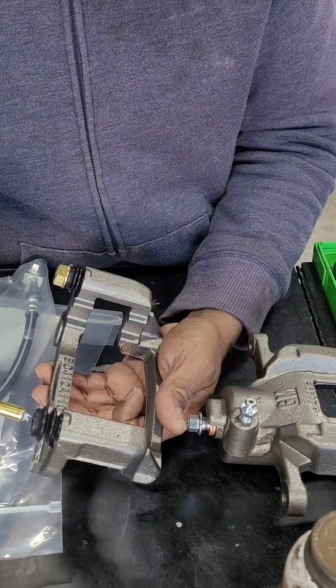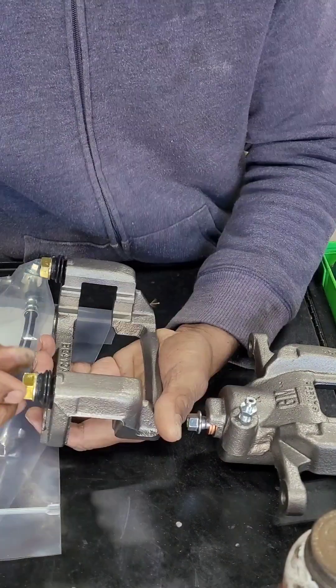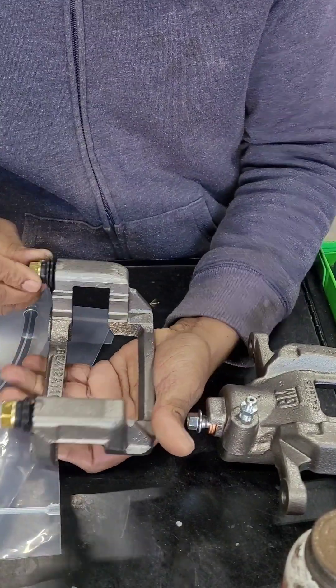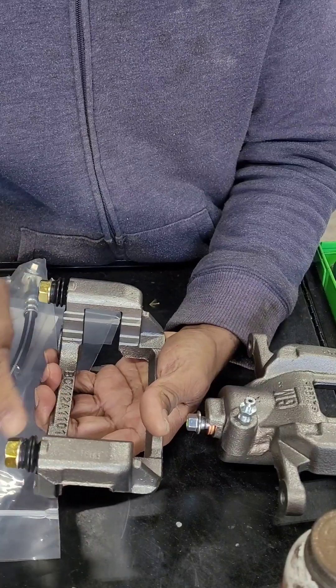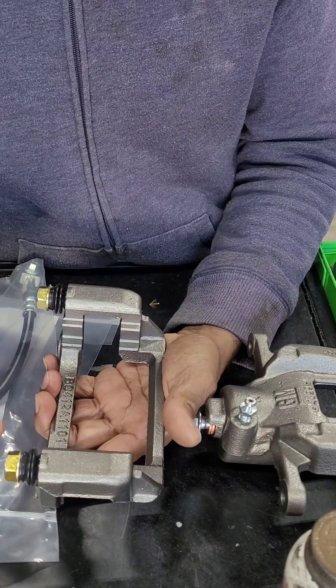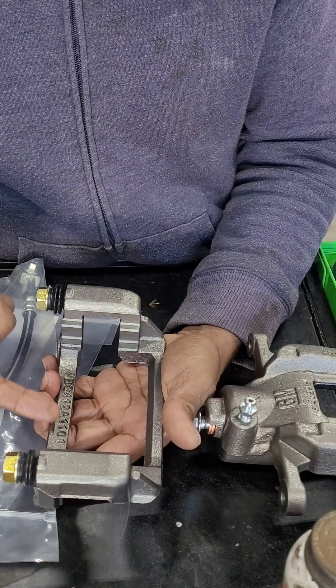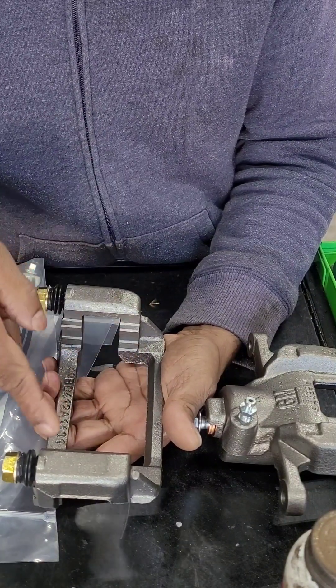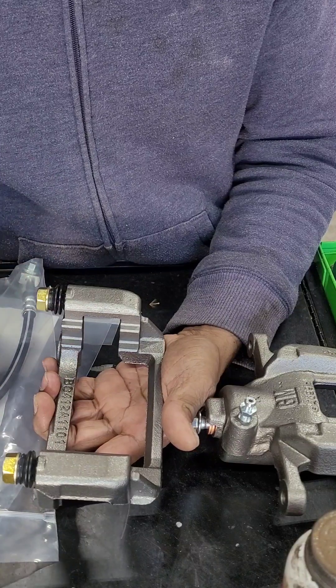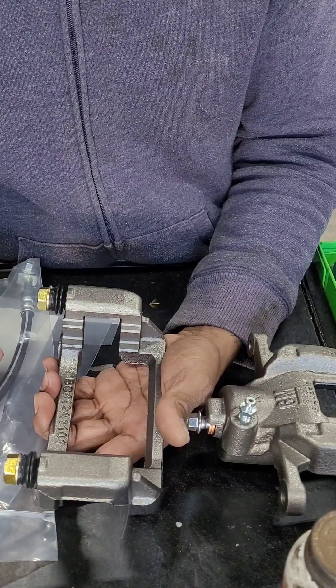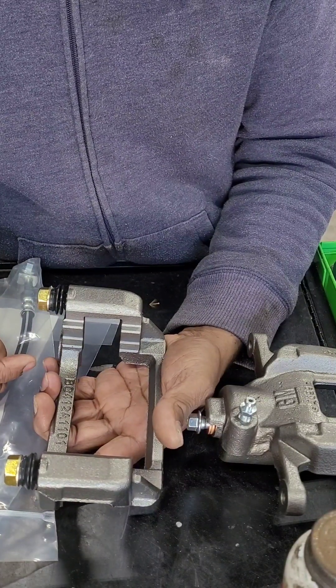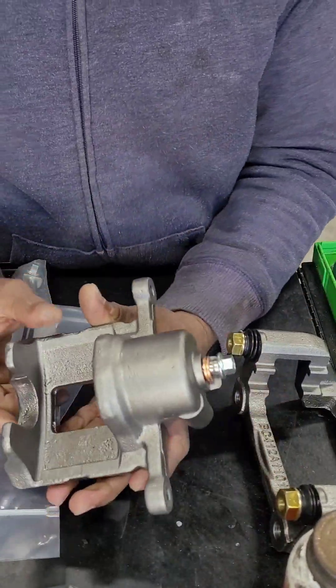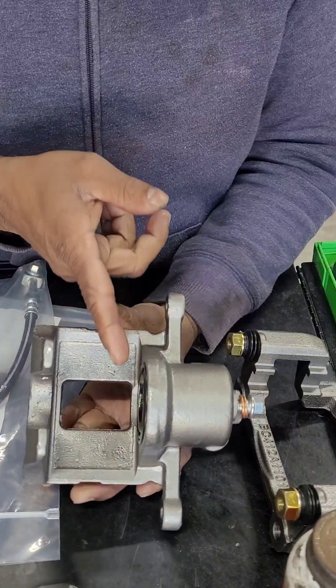So make sure you use the correct grease, lubricate it, put it back, and make sure it's nice and free like that. Then you have a good working bracket. Normally when these things are seized up in here, you can get a spongy brake pedal or your brake pad is eating up on one side. You have two brake pads and one side will eat up—that's some of the problems you'll run into. So if the pads are eating up, it's not always a caliper—you can have a problem here.